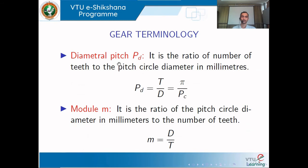Diametrical pitch is the ratio of the number of teeth to the pitch circle diameter in mm. The module is the ratio of the pitch circle diameter in mm to the number of teeth. Diametrical pitch and circular pitch are related by: diametrical pitch = π / circular pitch. Circular pitch can also be written as π times the module.